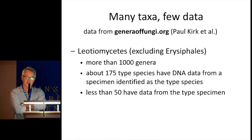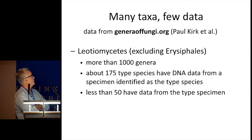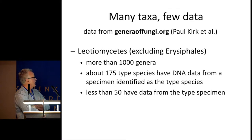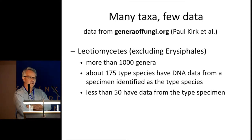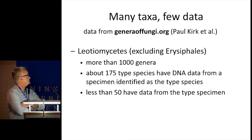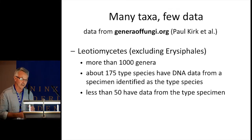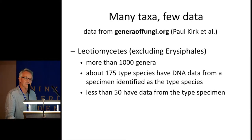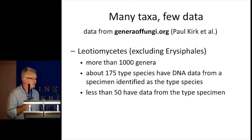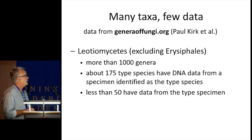There are lots of taxa, but not a lot of data available to deal with them. This data is from the Genera Fungi spreadsheets. If you take the Leotiomycetes and remove the powdery mildews — the Erysiphales — this leaves more than a thousand genera, or I should say generic names. About 175 type species of those genera have DNA available from a specimen identified as the type species. There's a lot of faith involved in using that data, because fewer than 50 have data from the actual type specimen itself.